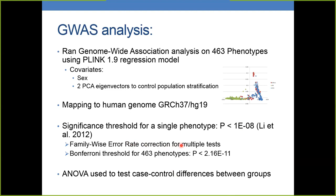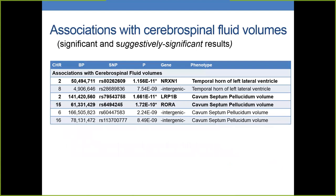We also used a family-wise error rate to correct for multiple tests. A Bonferroni correction for the whole number of phenotypes gives 2.16×10⁻¹¹. Even with this very stringent threshold, we found important and significant results. In a post hoc fashion, we used ANOVA to test case-control differences between groups — schizoaffective, bipolar, and schizophrenia. We consider suggestively significant anything below 1×10⁻⁸, and significant anything that crossed the family-wise error rate, which is 1×10⁻⁸ divided by the number of phenotypes in that category.